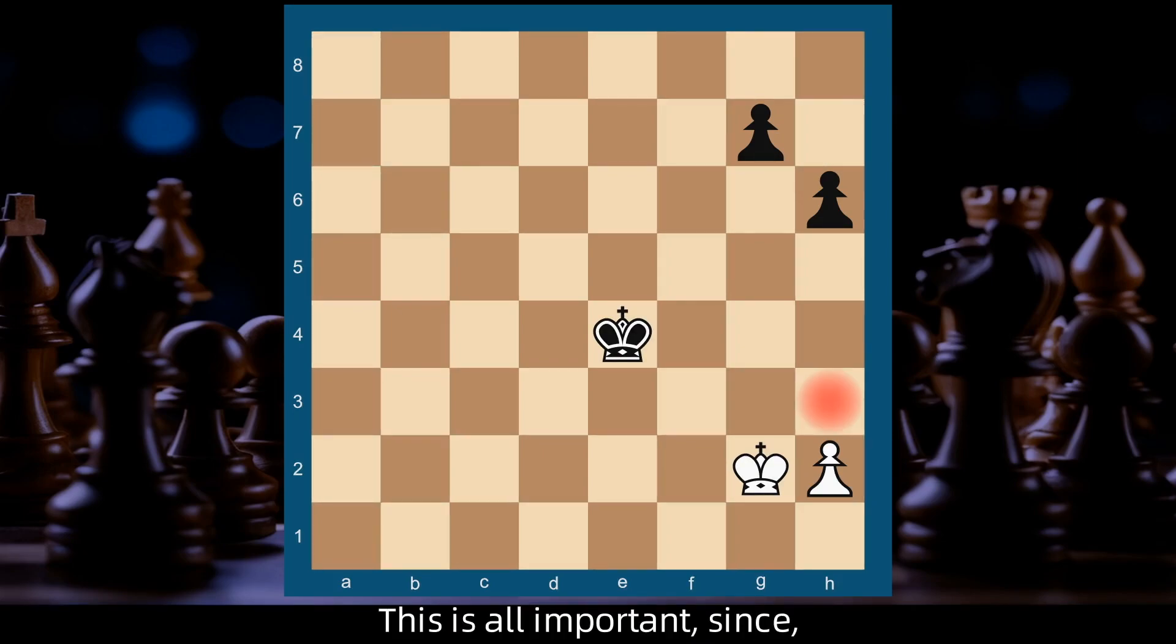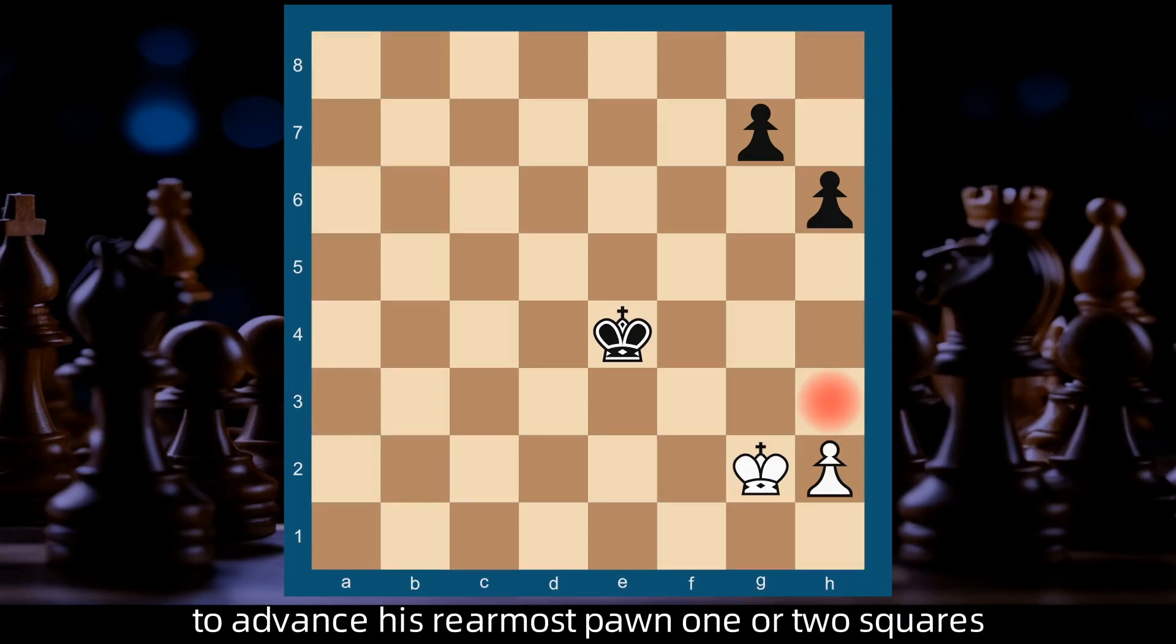This is all important since in order to win the game, it is essential at the end that Black may be able to advance his rearmost pawn one or two squares according to the position of the White king.